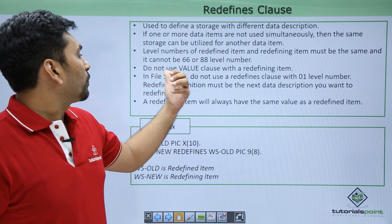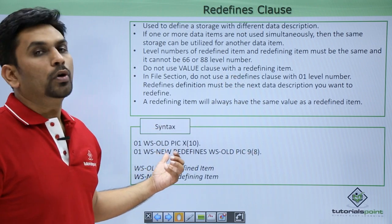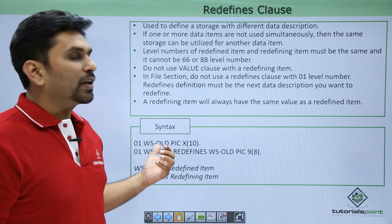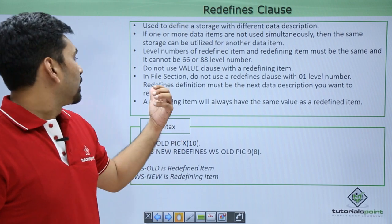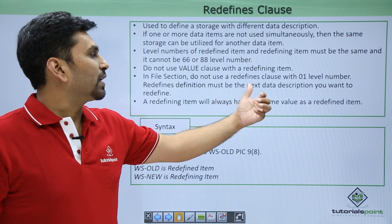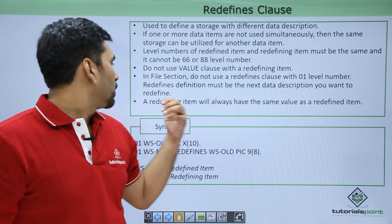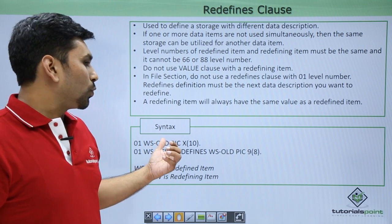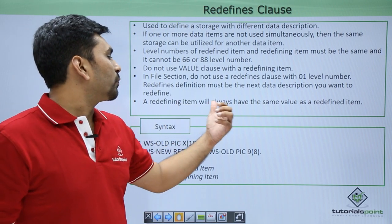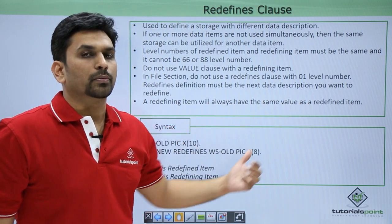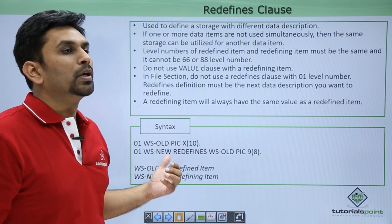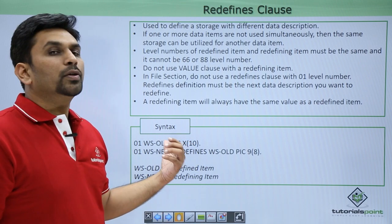With the redefining item — like WS-NEW — we cannot use the value clause. Also, it cannot be level number 66 or 88. In the file section, do not use the redefines clause with level number 01. The redefines definition must be the next data description after the item you want to redefine. The redefining item will always have the same value as the redefined item, because they point to the same memory location.